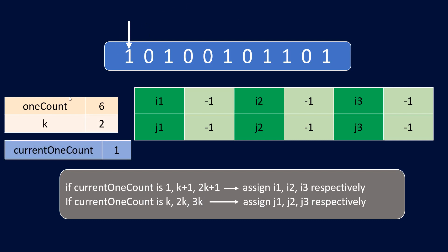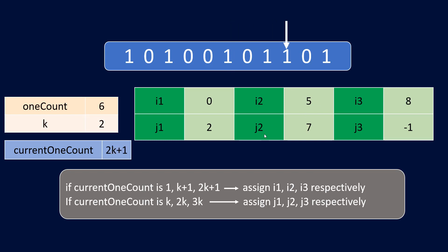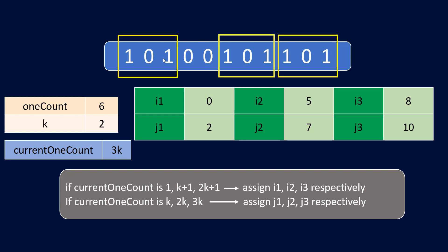Starting from the first index, the current count of 1s becomes 1, so we update i1 to index 0. For the next 0 we do nothing. Moving to the next 1, the count becomes 2 which equals k, so we update j1. Similarly, we skip the 0, then when count becomes k+1 we update i2, and continue to assign j2, i3, and j3. Now we have the partitions ready, considering only numbers starting and ending with 1.